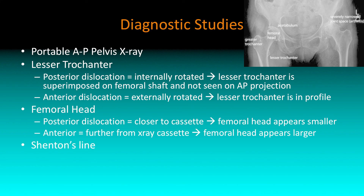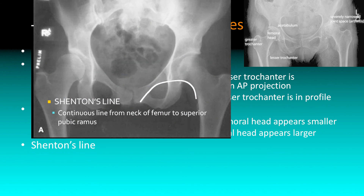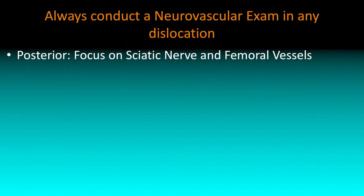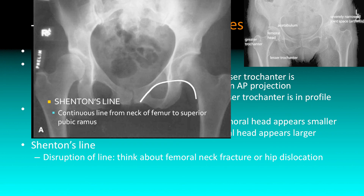Then there's Shenton's line — a line that goes from the neck of the femur to the superior pubic ramus. If you see disruption of this line, think about some sort of pathology. In a hip dislocation, think about either the femoral neck or the hip being dislocated. In this case it's disrupted, but this particular picture is just really bad arthritis — so it can happen from other things too.